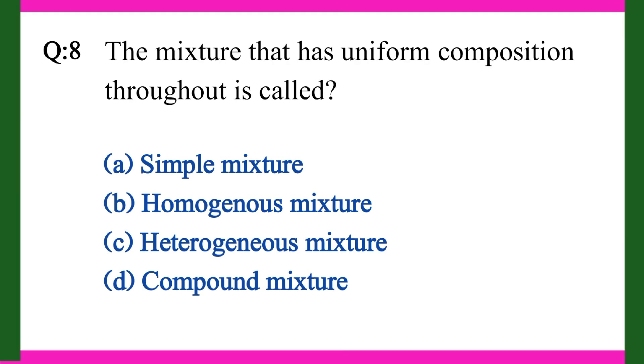Question eight: The mixture that has uniform composition throughout is called. A. Simple mixture, B. Homogeneous mixture, C. Heterogeneous mixture, D. Compound mixture. Right answer is B. Homogeneous mixture.